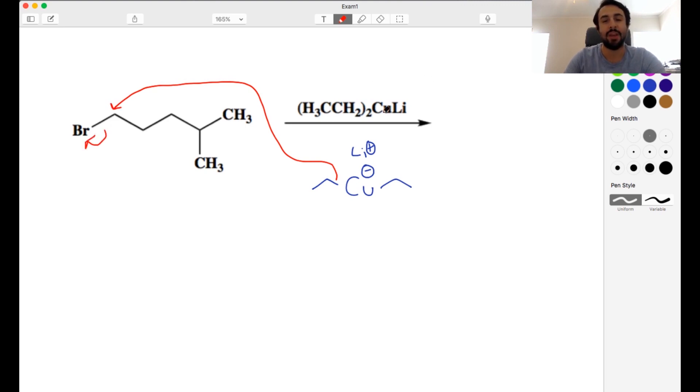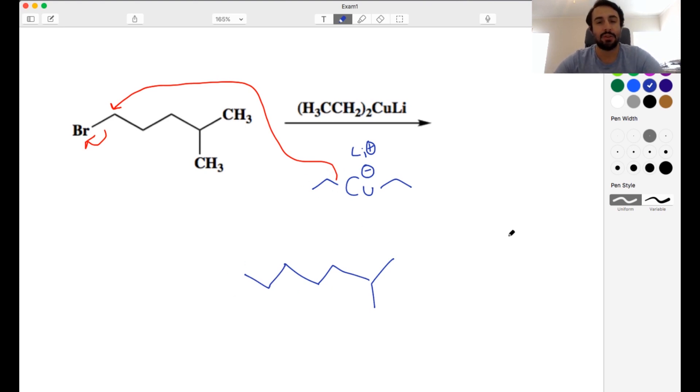Let's say this ethyl group right here will go and just do SN2 and kick off the bromine. When we see organocuprates, it's a little confusing because we see two of that alkyl group, but whatever it is, one of them is going to act as a nucleophile. So what do we end up with? We've got the same molecule, and then we need to have two more carbons on there. So these are the two additional carbons that came from that organocuprate.